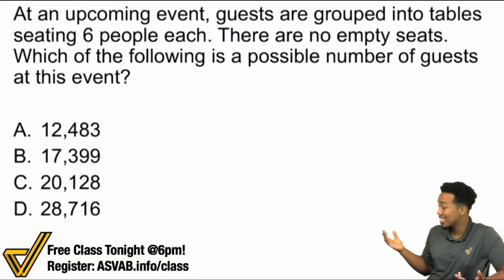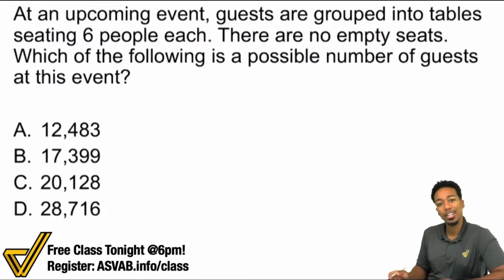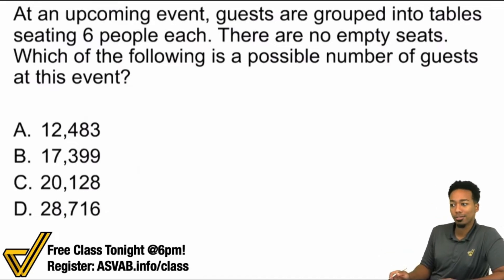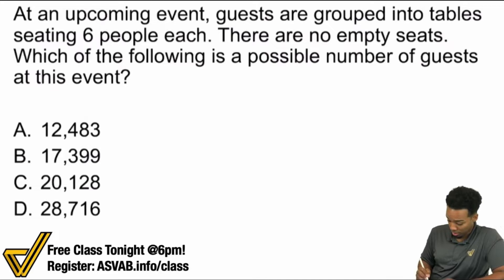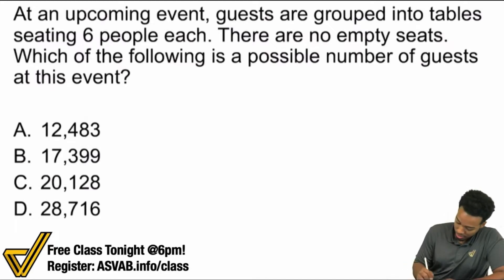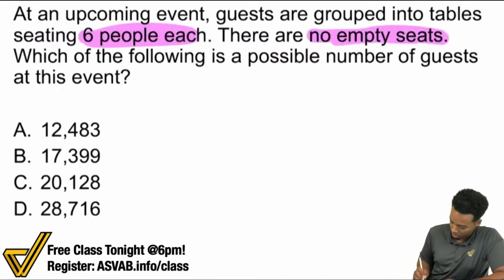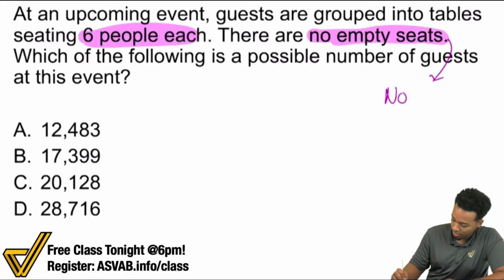Which of these is divisible by six? How do we know which number is divisible by six? Six people each, no empty seats — which means no remainders. There are no remainders. That's the big giveaway.